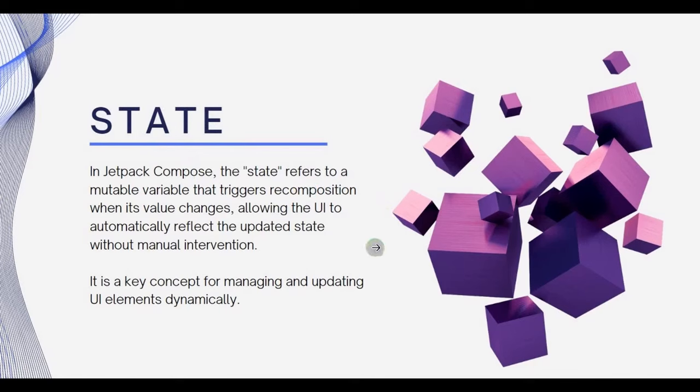State in Jetpack Compose refers to a mutable variable. Now what is mutable? Something that has the capability to change, means it's not fixed. On the other side, immutable means that is fixed. So mutable variable means a variable that can change later. Another definition does not stop here. It also says when its value changes, allowing the UI to automatically reflect the updated state without manual intervention.